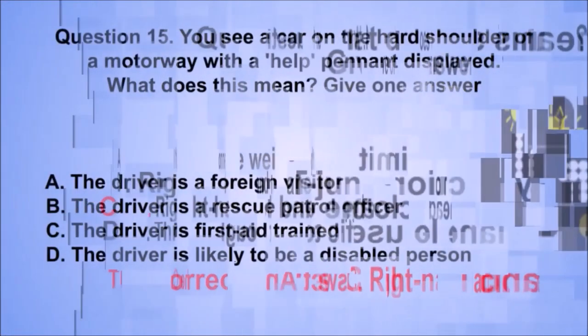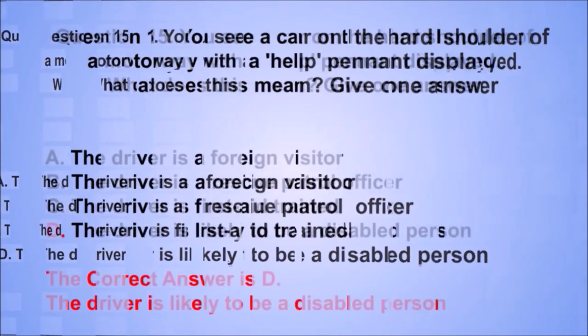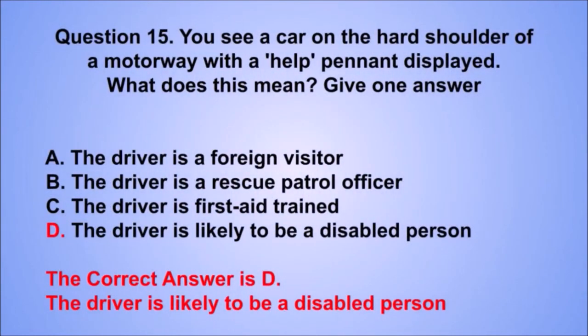Question 15. You see a car on the hard shoulder of a motorway with a help pennant displayed. What does this mean? The correct answer is D: The driver is likely to be a disabled person.